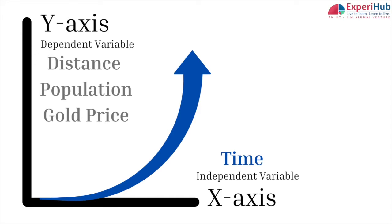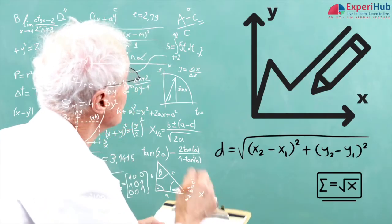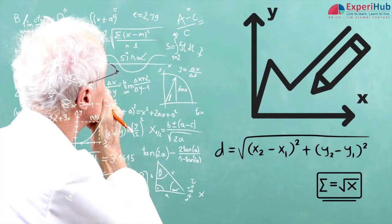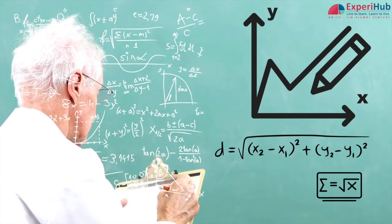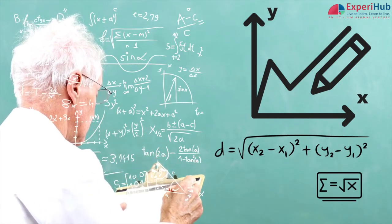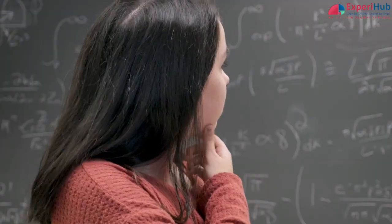So we plot these values on the y-axis, with the independent variable time on the x-axis. But why do we plot the independent variable on the x-axis in the first place? Well, this is more of a convention — it could have been the other way had mathematicians started representing the independent variable on the y-axis.